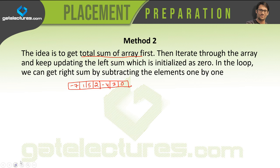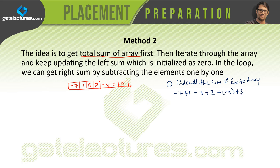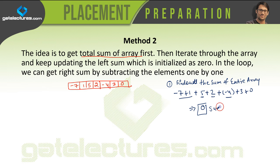The first thing we are going to do is find out the sum of the entire array. The sum is minus 7 plus 1 plus 5 plus 2 plus minus 4 plus 3 plus 0, which equals 0. So the total sum is 0, and we are going to store this into a variable called sum.